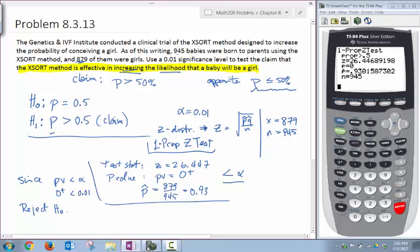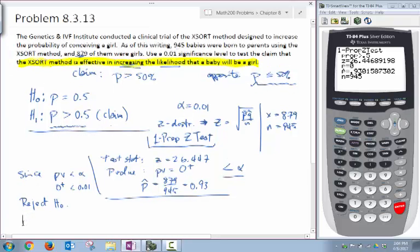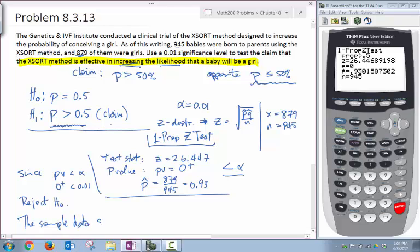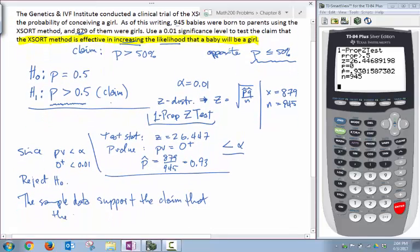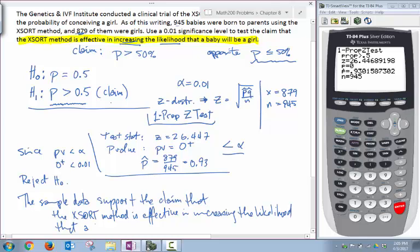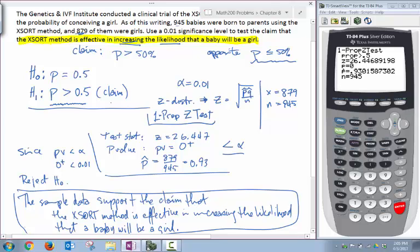First we ask ourselves if our original claim contains a condition of equality, and we see that it does not. And then we in fact rejected the null hypothesis so that we can say we actually support the claim. So we can type that up and use the exact same words that's used here: Support the claim that the X-sort method is effective in increasing the likelihood that a baby will be a girl. So this is our conclusion in non-technical terms.